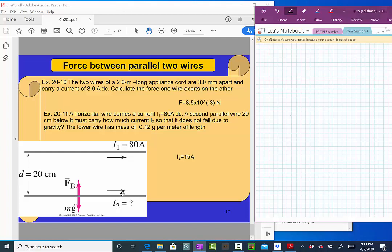This wire I2 is not being nailed to anything. This wire I2 is not going to fall because of this attractive force caused by wire I1.